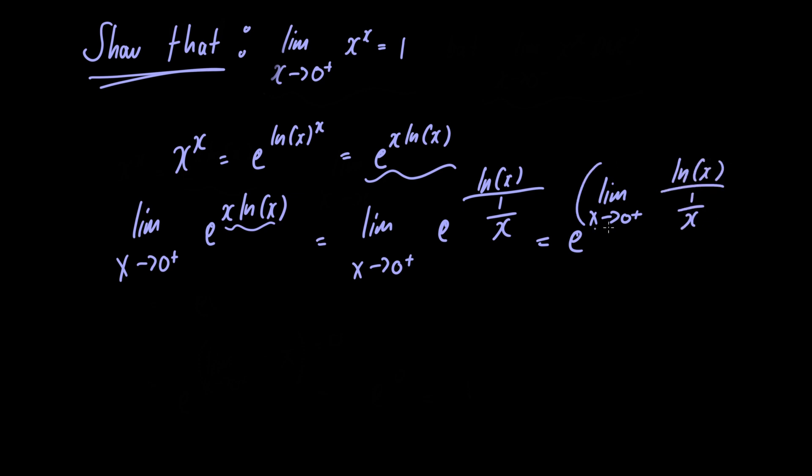The conditions for L'Hôpital's rule are satisfied. Let's go ahead and apply it. We have e raised to the limit as x approaches 0 from the right of 1 over x divided by minus 1 over x squared. We've just taken the derivative of these two here.